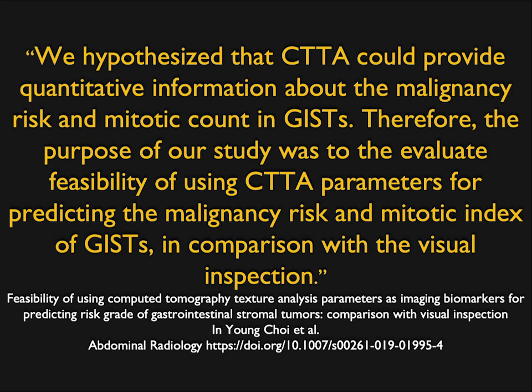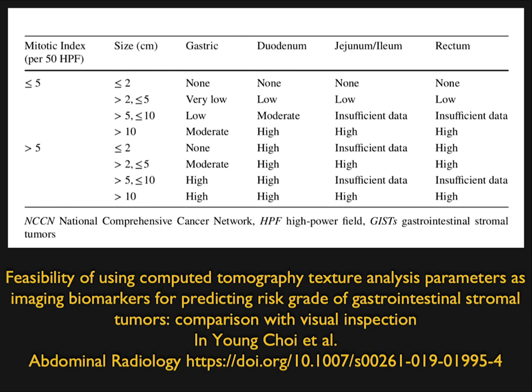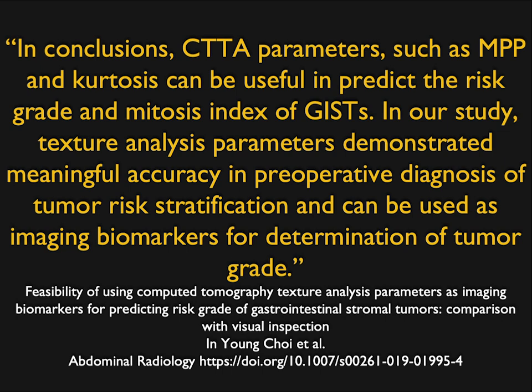Here's another example looking at the grade of GIST tumors — not only detecting lesions but doing the grading, and then you're replacing biopsy or other markers. It's a very cost-effective thing, and yet you're giving better patient care. Perhaps it'll allow you to make more decisions on what patients need to get operated on. We see the same with neuroendocrine tumors — not just detecting them, but based on stage, determining who to follow and who should have surgery. There are many questions to be answered, but we have new techniques. CTTA parameters such as MPP and kurtosis can be useful in predicting the high-risk grade and mitosis index of GIST.